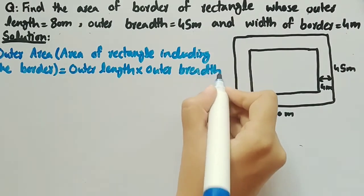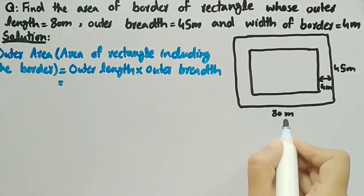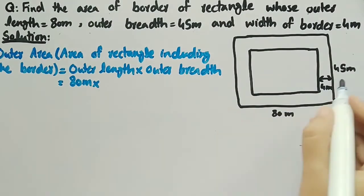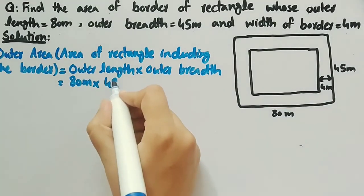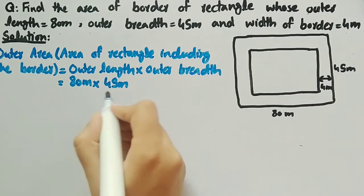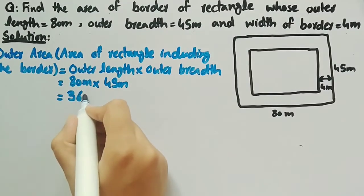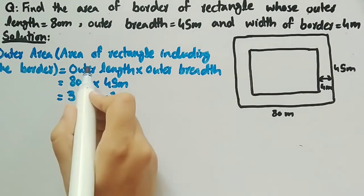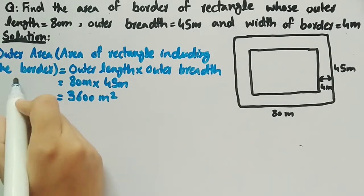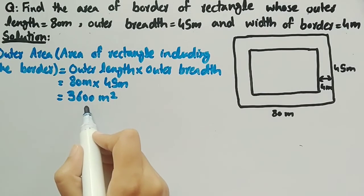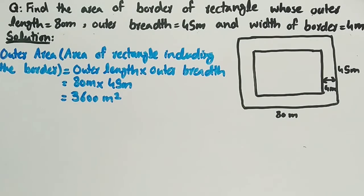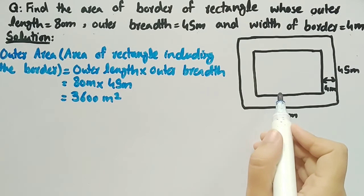Now we will substitute the values: outer length is 80 meters multiplied by outer breadth that is 45 meters. Multiplying these two we get 3600 meter square. That is, the outer area or area of rectangle including the border is 3600 meter square.